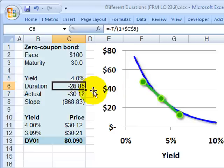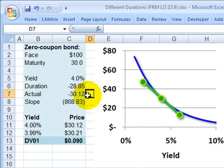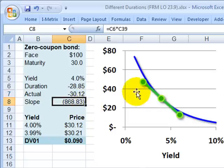The duration of this bond happens to be about negative 28. Remember the interpretation of that. That means if the yield changes by 1%, then the price of the bond changes by approximately 28%. Emphasis on approximately because this is a linear approximation that's flawed.